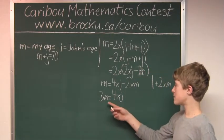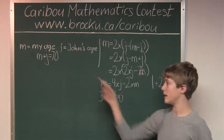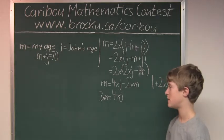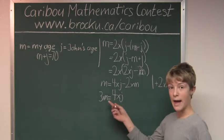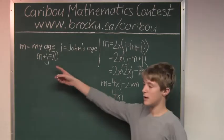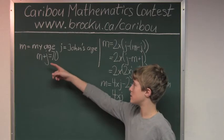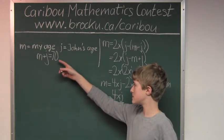Now, since we cannot simplify this anymore, we have to look at this equation which is m plus j equals 70. We want to find out m, but j is in the way. So, we have to look at this equation. We could do j equals 70 minus m.